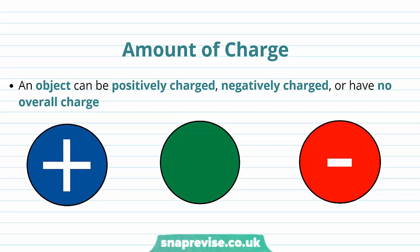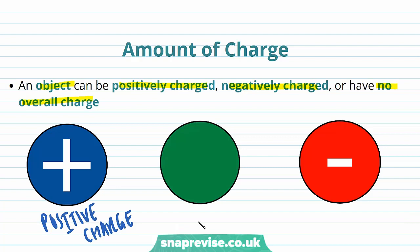Let's think about the amount of charge an object can possess. An object can be positively charged, negatively charged, or have no overall charge. Here we have examples of an object that is positively charged, a neutral object which has no charge, and a negatively charged object.